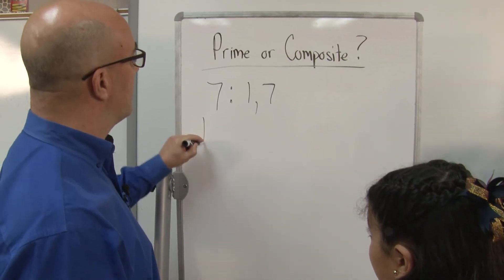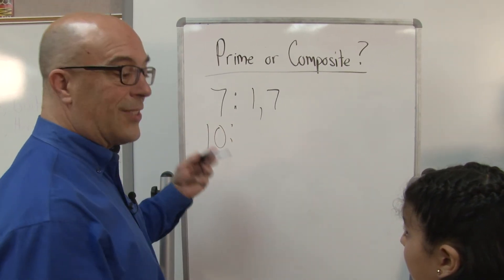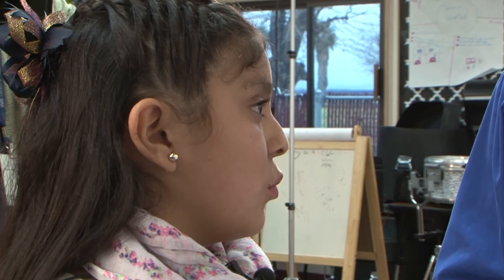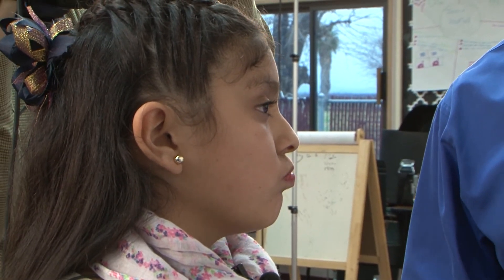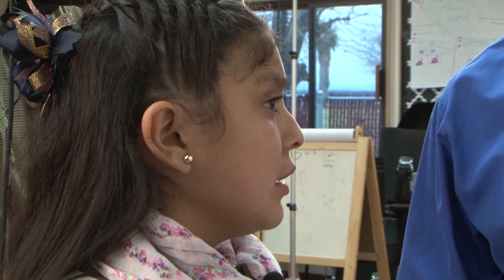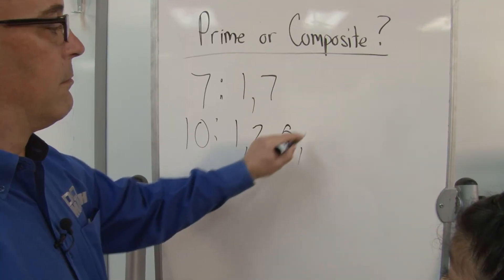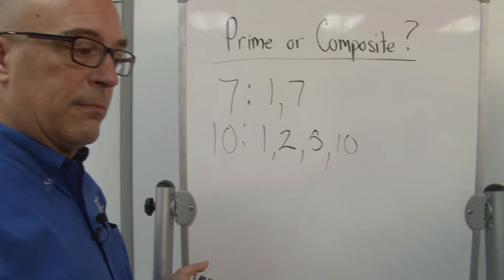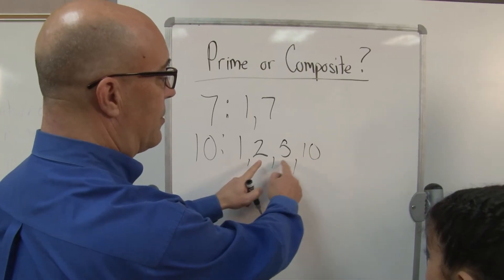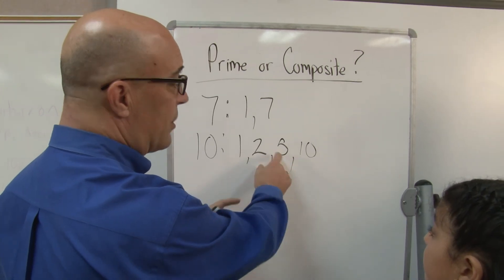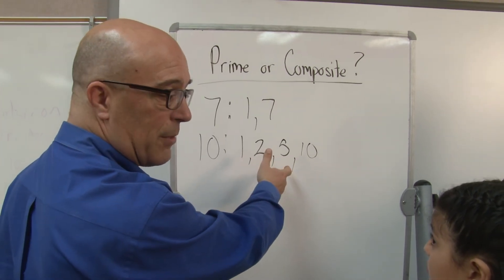So what about 10? What can go into 10? 1, 2, 5, and 10. Anything else? Nope, that's it, right? And we always want to make sure that they match up, because we've got 1 times 10 and 2 times 5 — 5 times 2, we still have the same numbers.